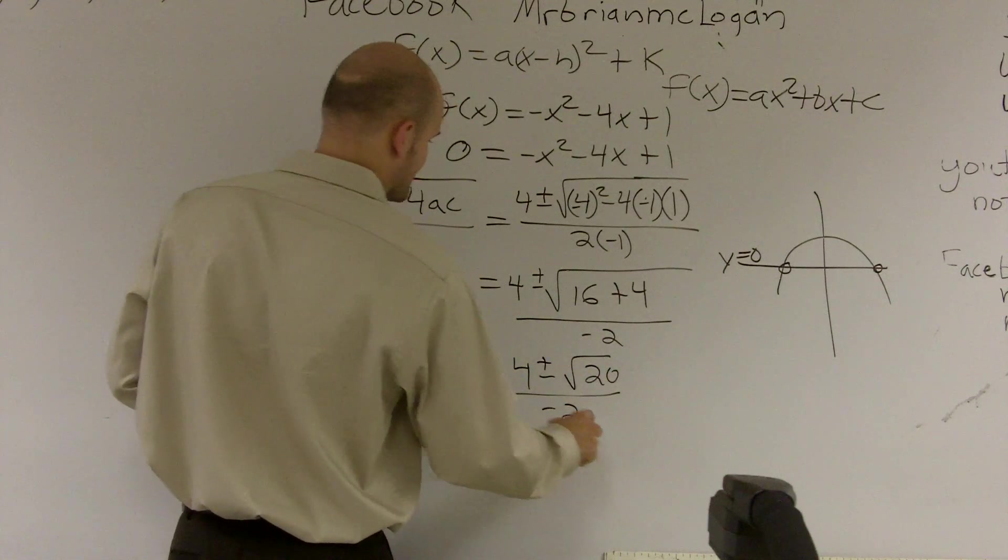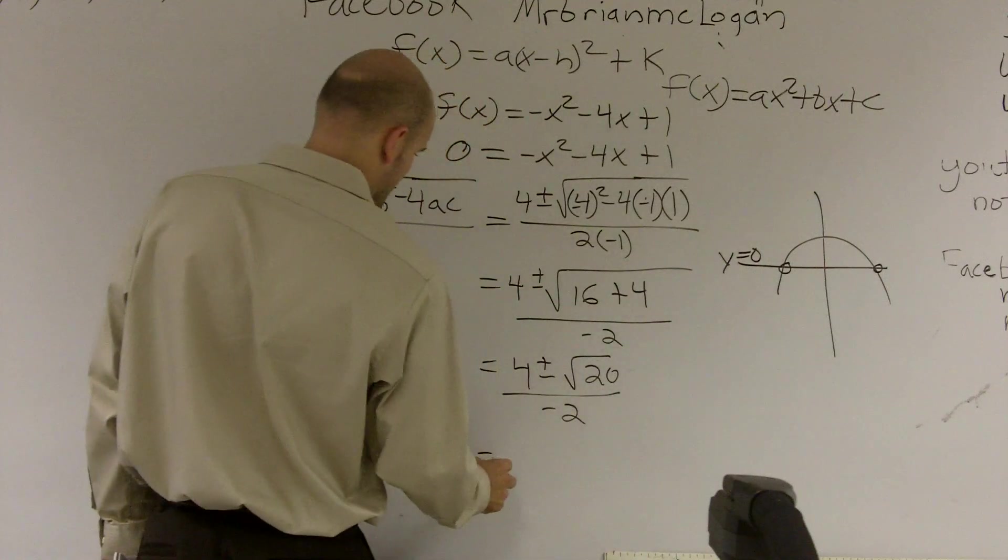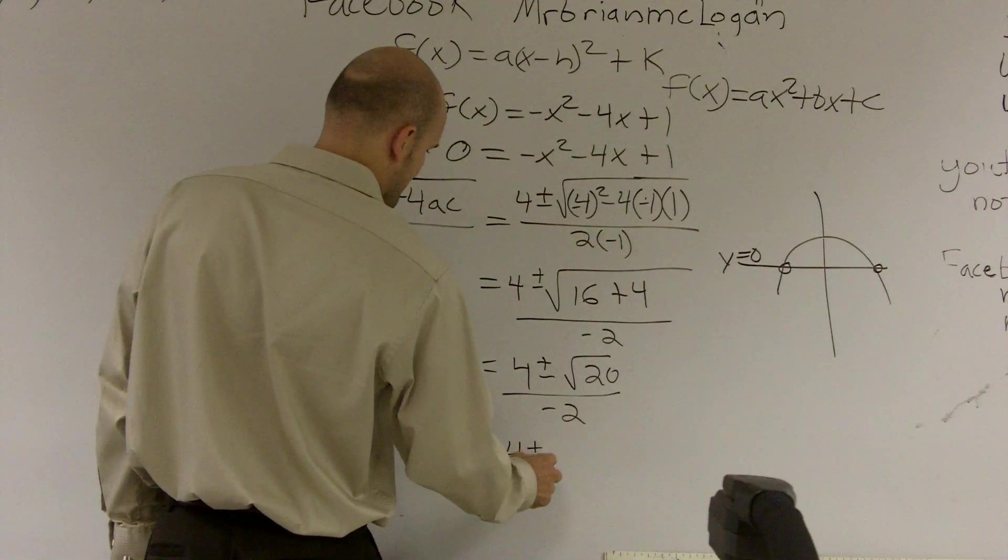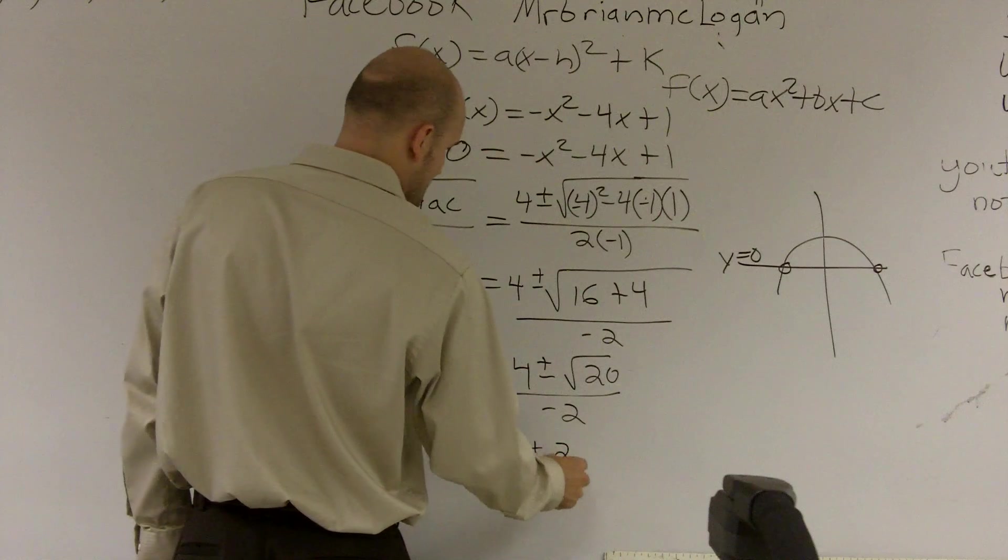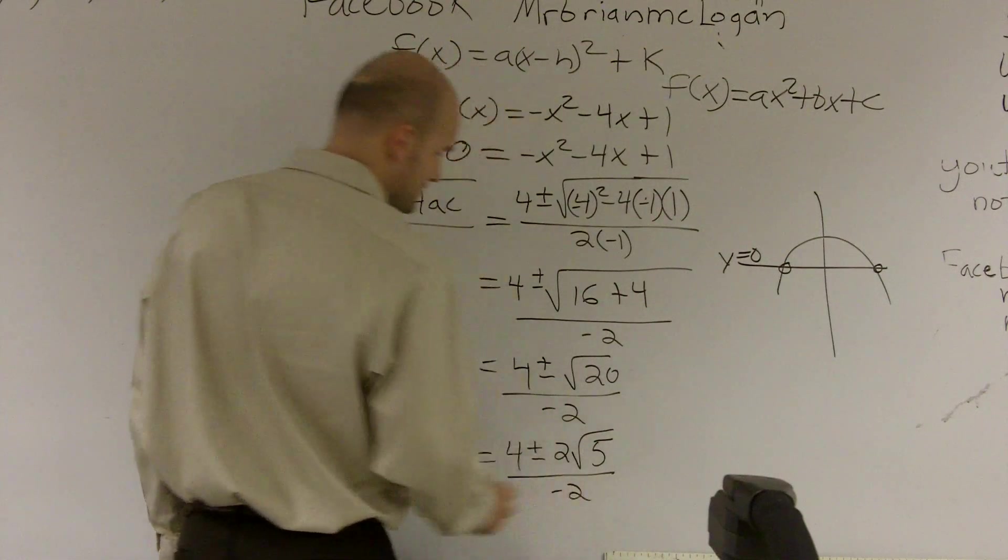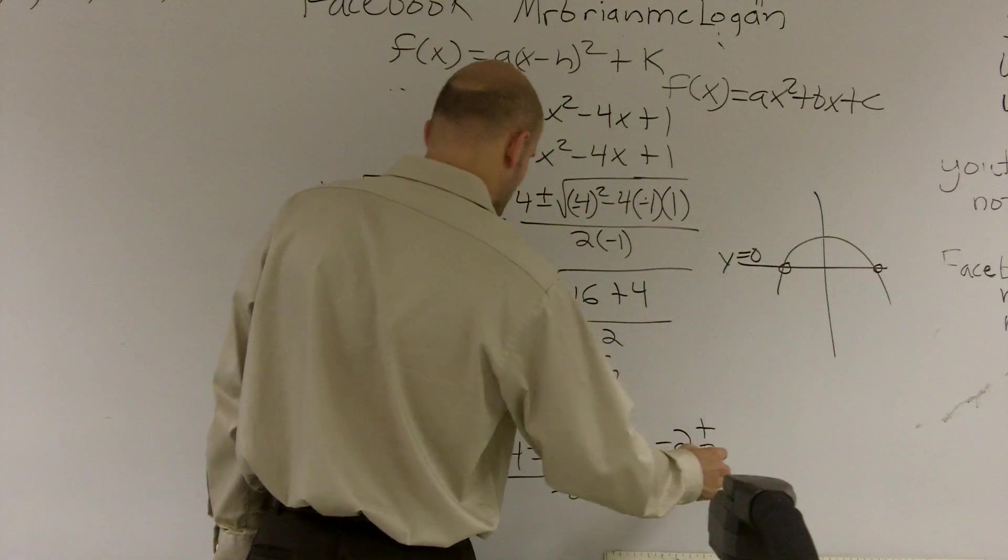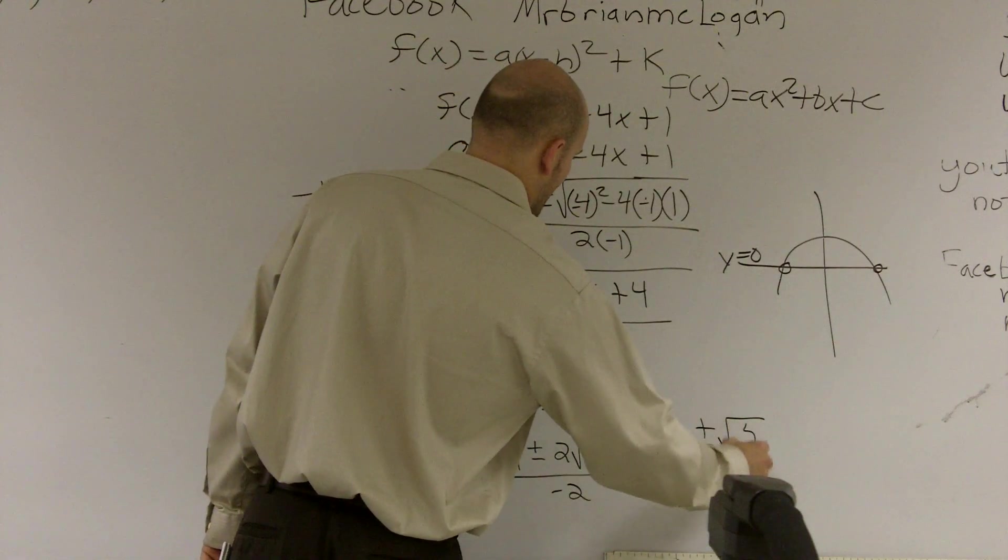Negative 4 plus or minus square root of 20, all over negative 2. Now reducing your radical, you guys should know how to do this, hopefully, negative 4 plus or minus. This can be reduced down to 2 square root of 5, all over a negative 2. Then we can rewrite this as negative 2 plus or minus the square root of 5.